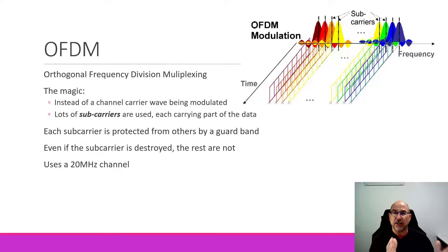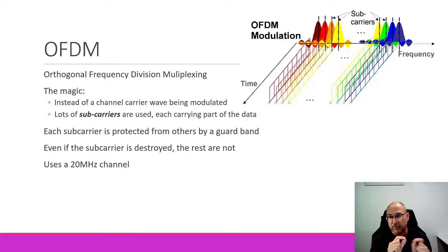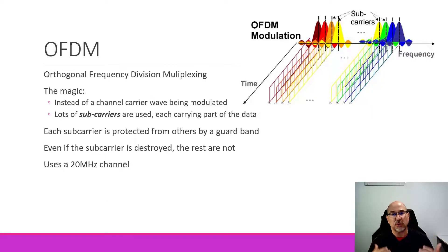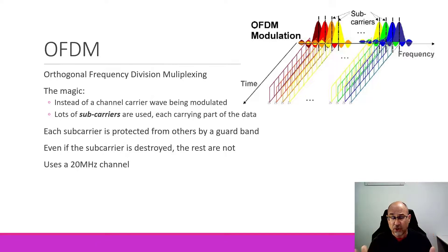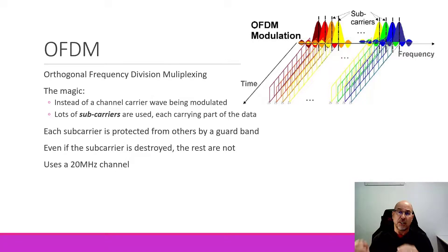Just like channels are protected from each other by a guard band in between, the sub-carriers are also protected by guard bands. When you apply a sub-carrier and increase the modulation on each one — so each sub-carrier is carrying 300k or something like that — you get an increase in the data rate over the course of a channel. Even if a sub-carrier is destroyed, the rest are not. You can always back off to simpler encoding schemes or advance to more complex ones — that's the basic idea behind OFDM.